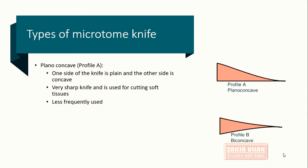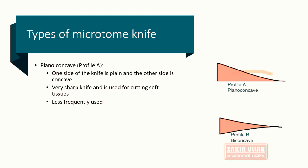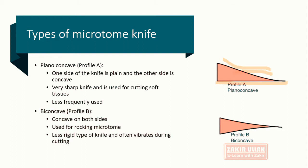Profile A is the plano concave type of knife. One side — the lower side — is the plane side, and the upper side is slightly curved and concave, as seen in the picture. This knife is very sharp and was previously used for cutting soft tissues, but is now less frequently used and not common in labs.